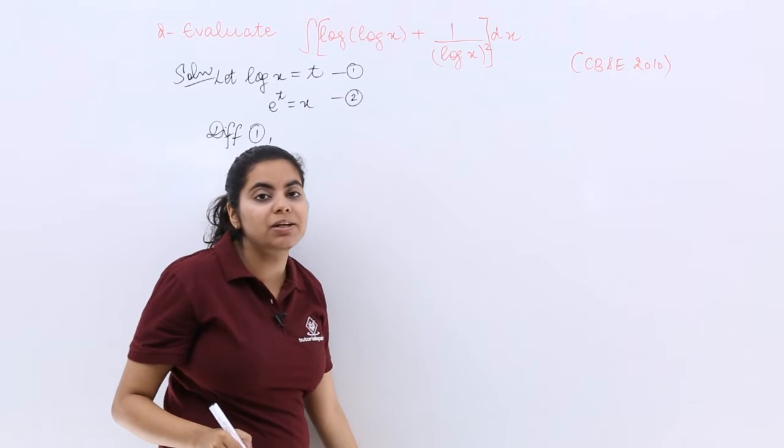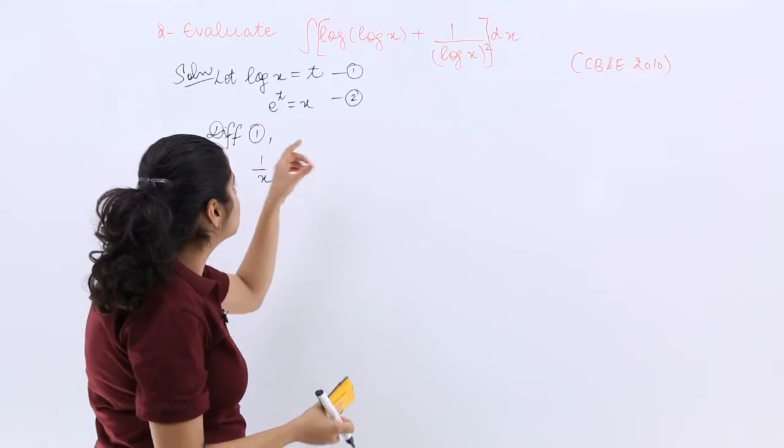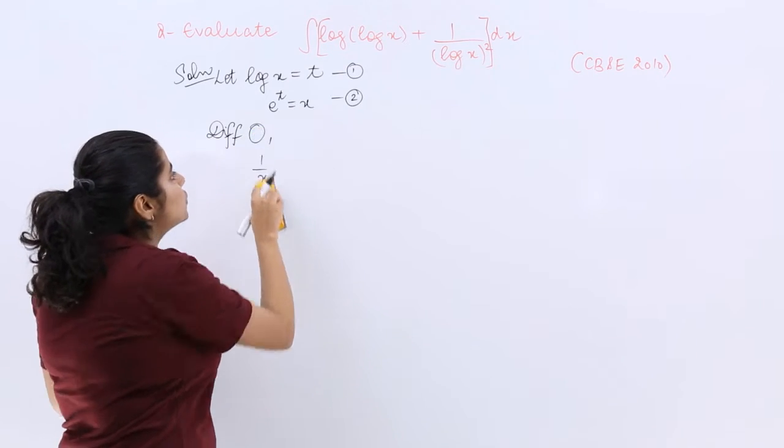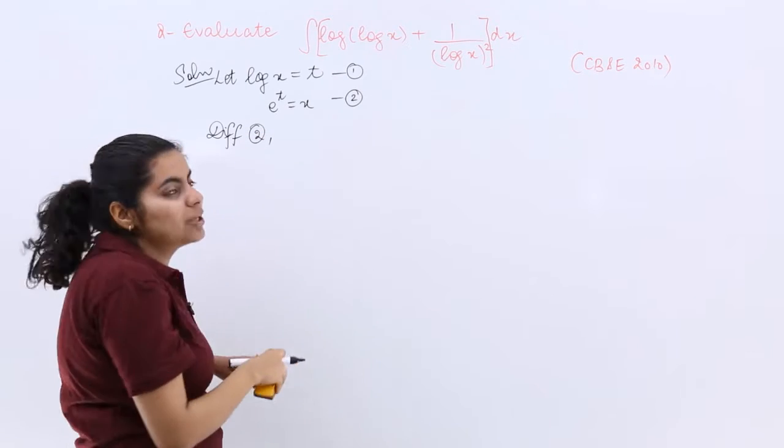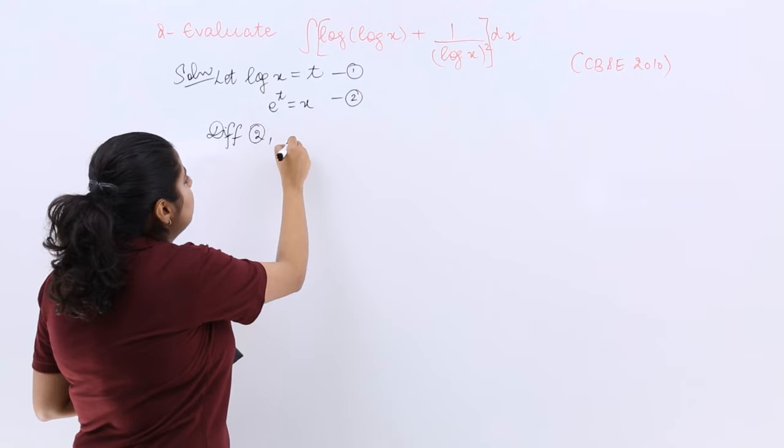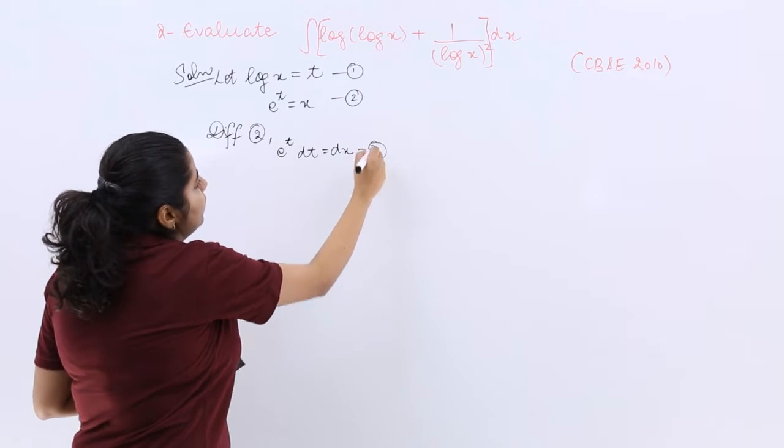But if you are going to differentiate 1, then there will be no use of using equation number 2. So let me now differentiate equation number 2 in order to get most of the benefit. So when I differentiate equation number 2, I get e raised to the power t dt is equal to dx and that is your equation number 3.